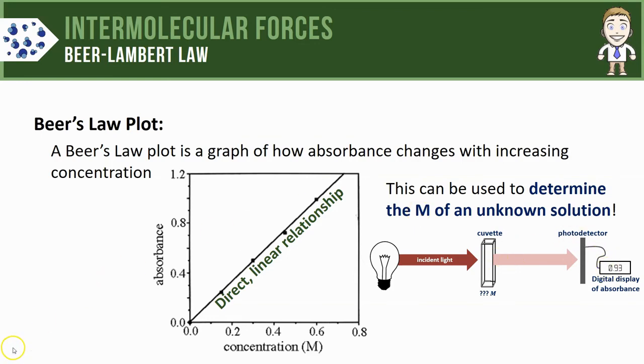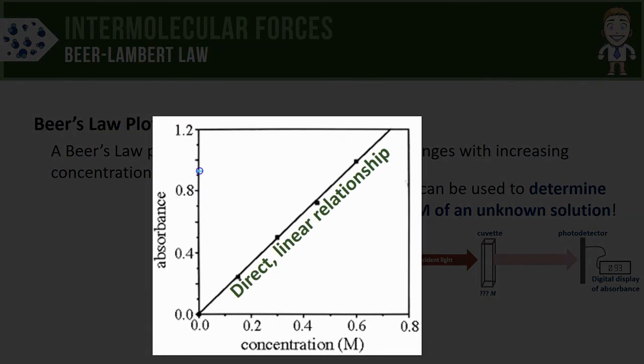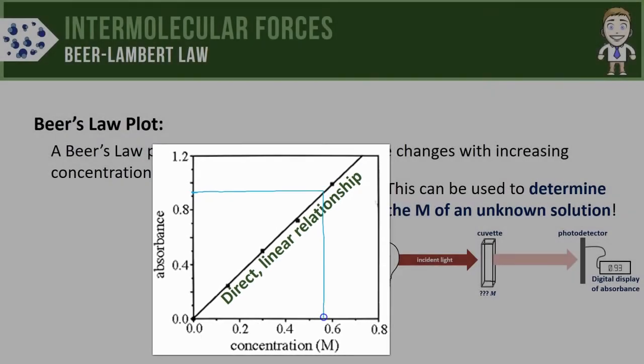Since it's a linear relationship between absorbance and concentration, I could find 0.93 on the vertical absorbance axis, follow that over to my line, and then follow it down to get an approximate